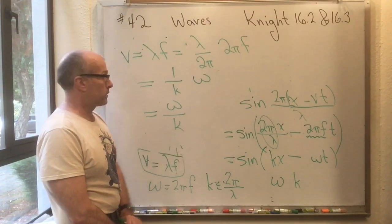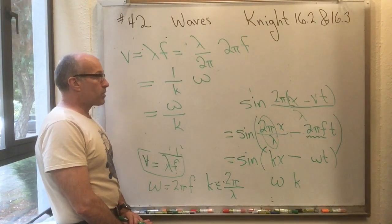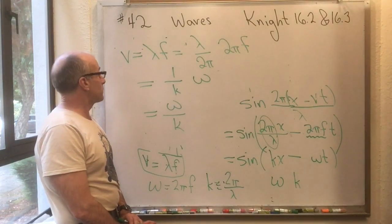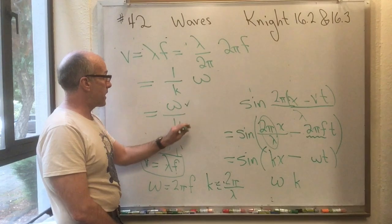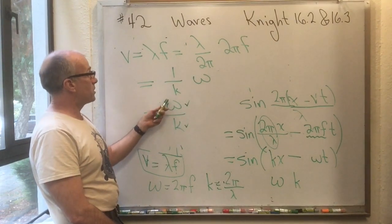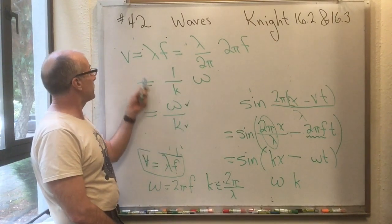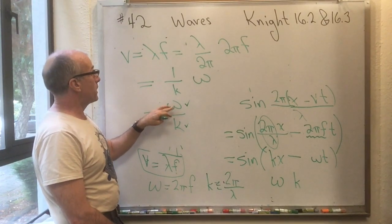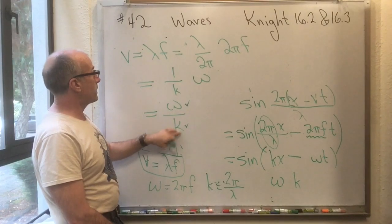You could also use cosine, of course. And I've introduced all the terms that we use to describe sinusoidal waves, which are omega and K, and I found the relationship of omega and K to V using the relationship between omega and F and between K and lambda.